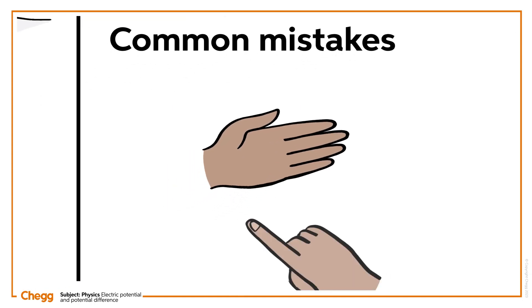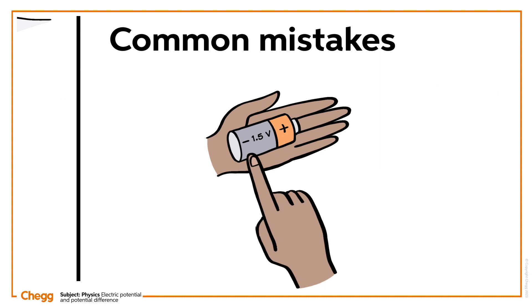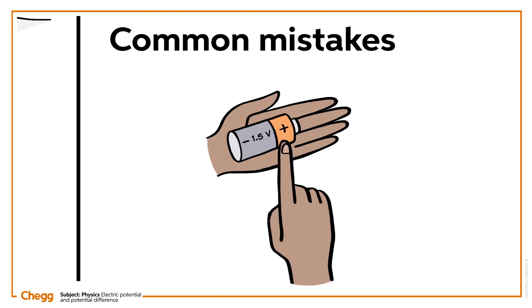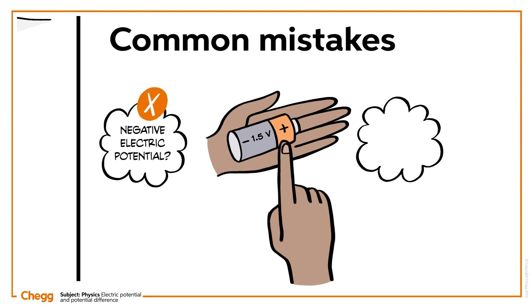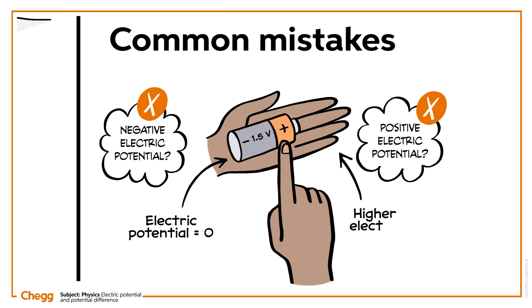Just because one side of a battery has a minus sign and the other has a plus sign, don't assume that one has a negative electric potential and the other has a positive one. The side with the minus sign actually has an electric potential of zero volts. In contrast, the side with the plus sign has a higher electric potential.